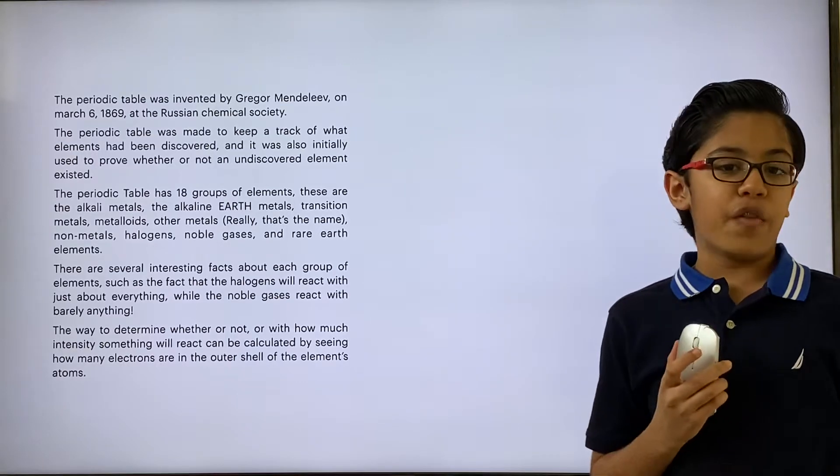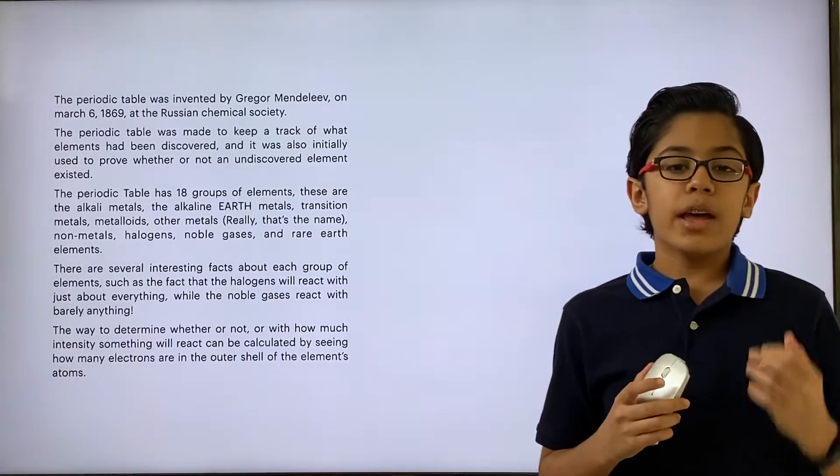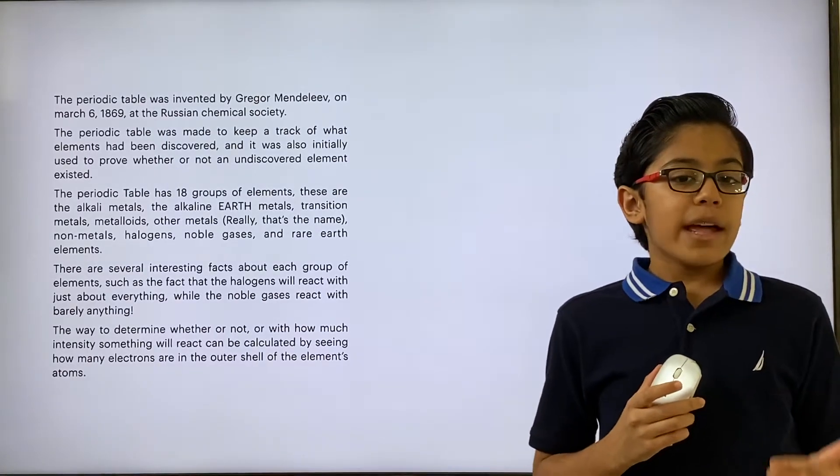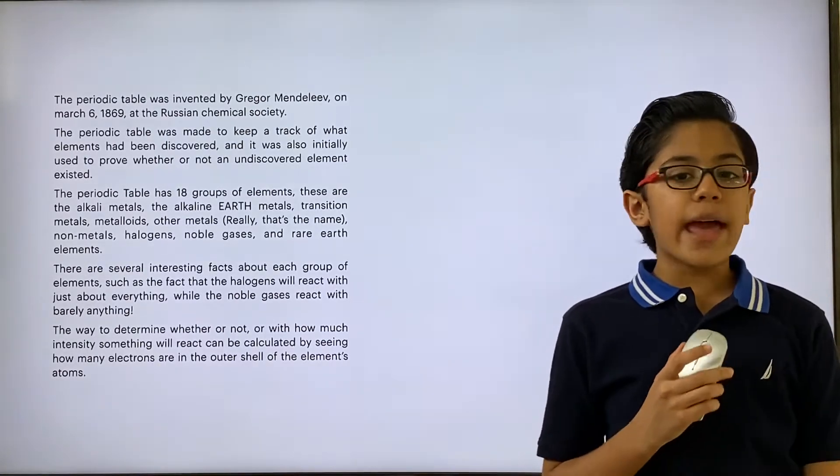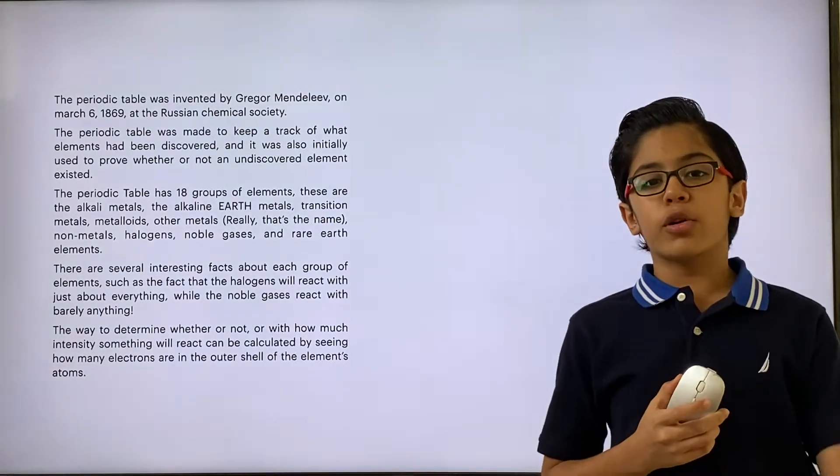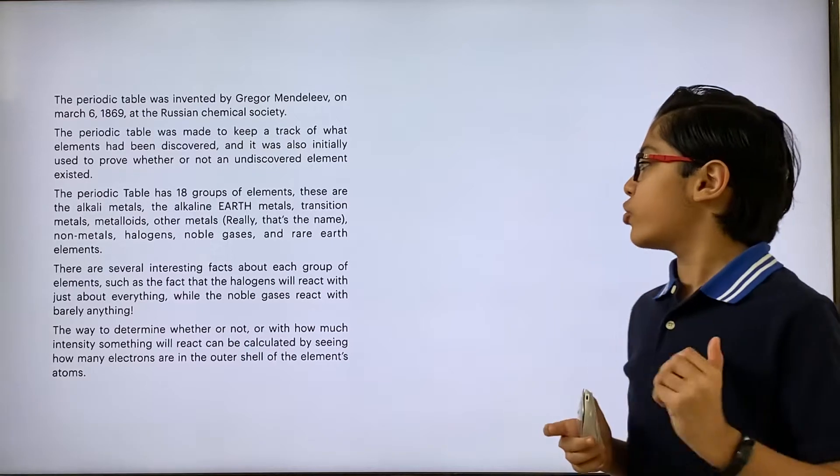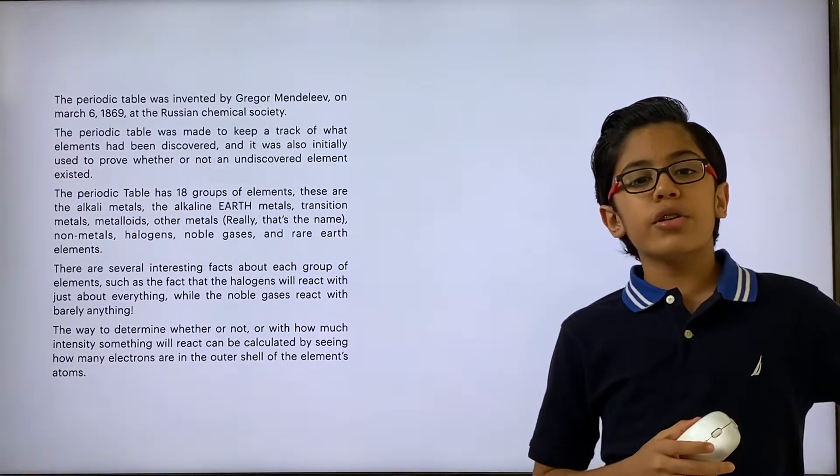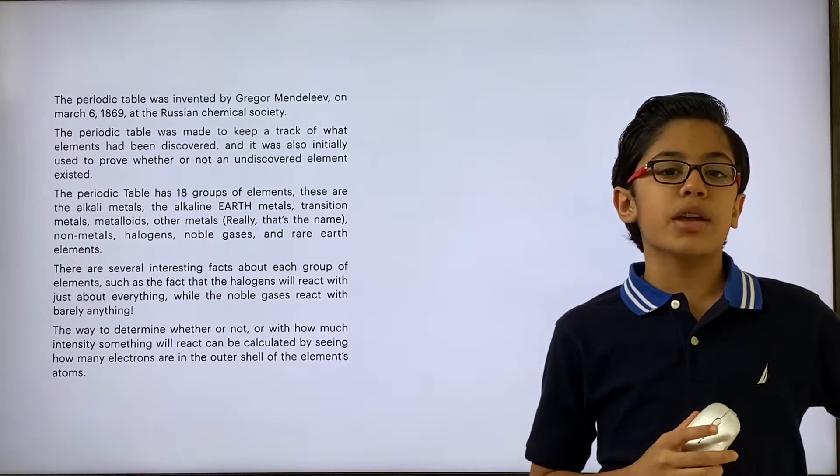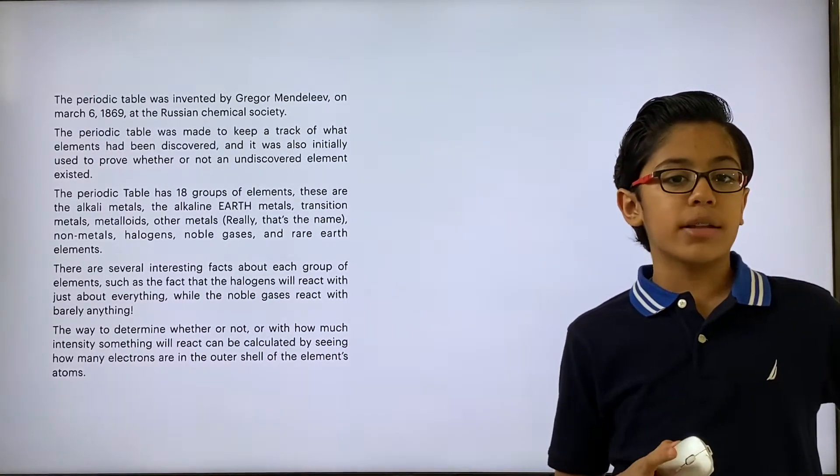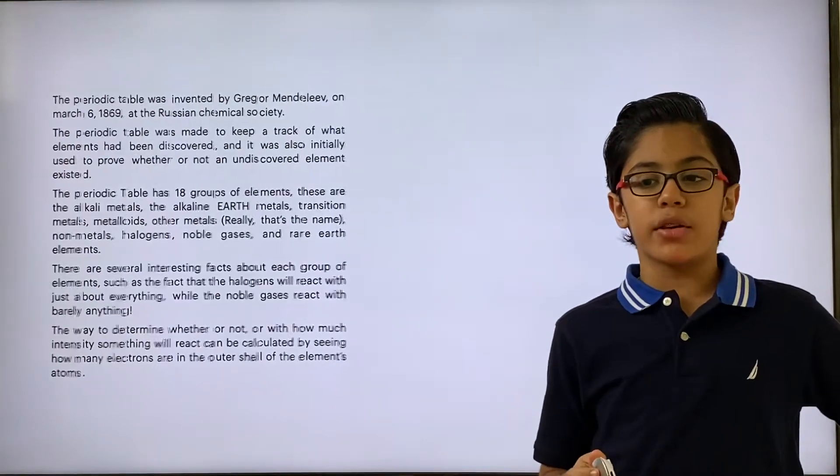There are a lot of fun facts about the periodic table, but for now I'll just share two of them. One of them is that the halogen group will react with just about anything on the periodic table, while the noble gas is basically their polar opposite. The way to determine with how much intensity something will react can be determined by seeing how many electrons are in the outer shell of the molecule.